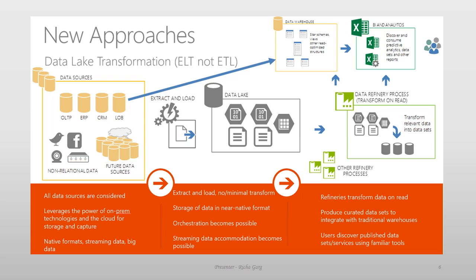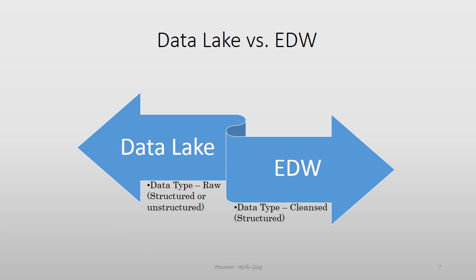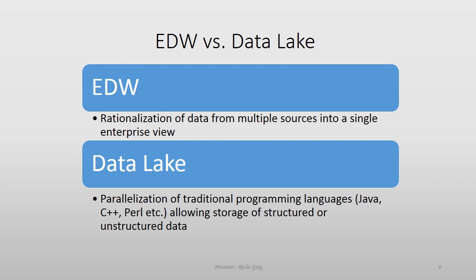Let's go over the true differences between Data Lake and Enterprise Data Warehouse. For Data Lake, the data type stored is raw — that could be structured or unstructured. For EDW, the data type is cleansed and structured data only. EDW rationalizes data from multiple sources into a single enterprise view, whereas Data Lake parallelizes traditional programming languages such as Java, C++, and Perl, allowing storage of structured or unstructured data.